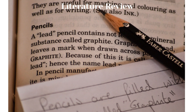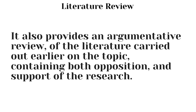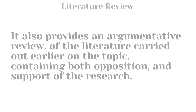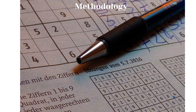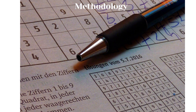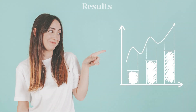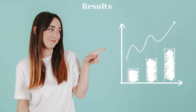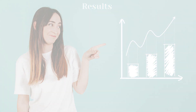Fourth part is literature review, which describes in detail about the earlier researches carried out on the topic. It also provides an argumentative review of the literature carried out earlier, containing both opposition and support of the research. Fifth part is methodology, which describes the research methods and techniques that will be used to carry out the research. It also explains the data collection and sample selection process. Sixth part is results, which contains the results of the research carried out, presenting the findings in a clear and organized manner.